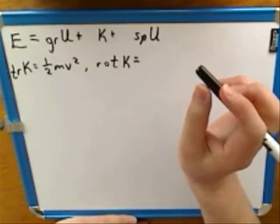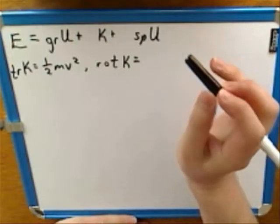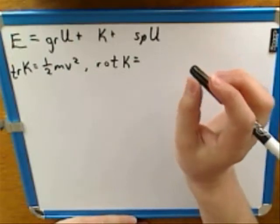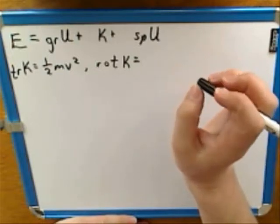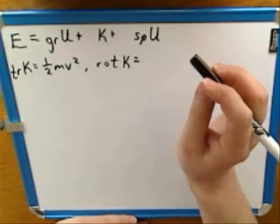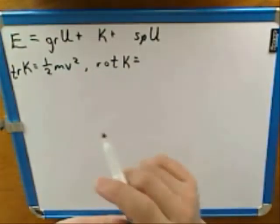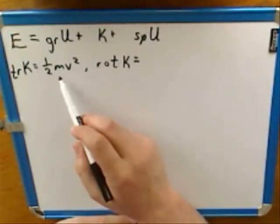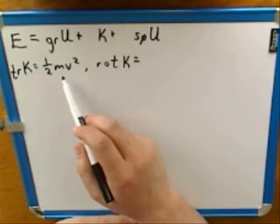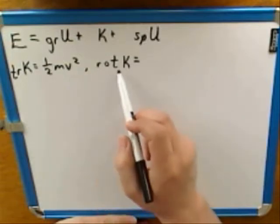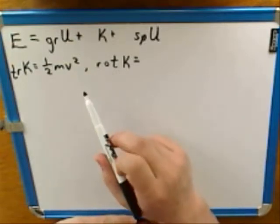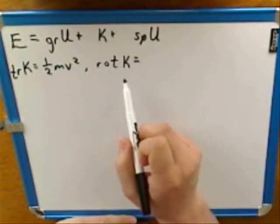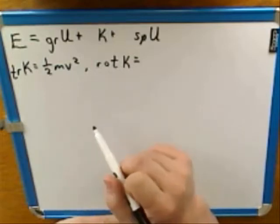We can actually figure out the formula for rotational kinetic energy by analogy. We've talked about how in rotation there are concepts analogous to those in translation. So how could you take our translational kinetic energy formula and update it to be about rotation? What would the new formula be using the analogous concepts?